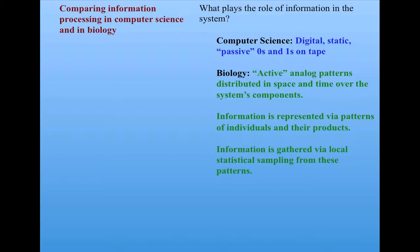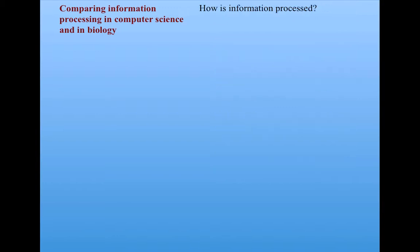Information is gathered via local statistical sampling from these patterns. For instance, an ant cannot see the whole information that's contained in the system, which might consist of all of the pheromone trails that have been laid by the ant colony. But they can gather some statistics by sampling the local concentrations of pheromone right where they are. Or when ants are trying to decide what task to adopt, they gather statistics about what other ants have been doing.